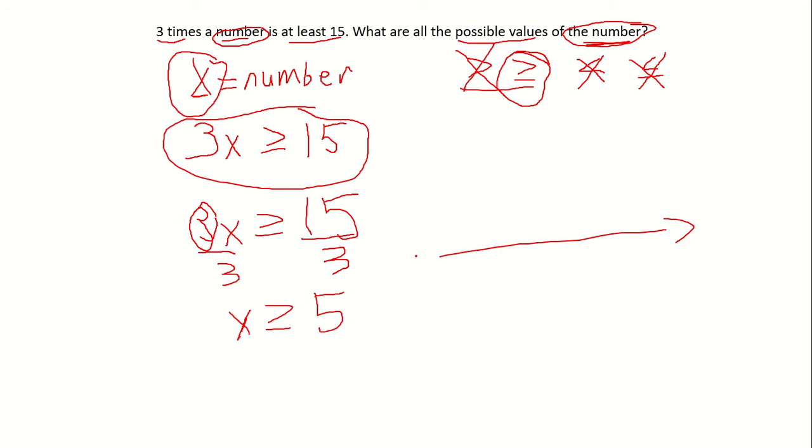If we were to graph this, we'd put the number 5 here. We'd have a circle on our 5, and that would be totally filled in because 5 is a possible value. We'd be all the numbers that are greater than or equal to 5.